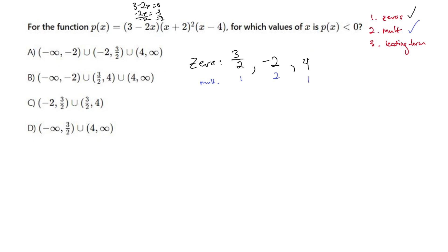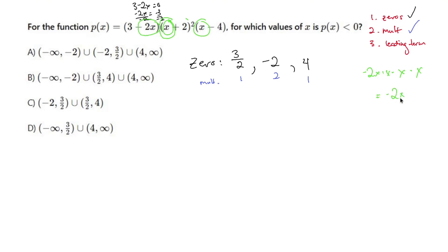The last thing is to find the leading term. You find it by taking the leading term of each factor and multiplying them together as many times as the exponent requires. The second factor's x is multiplied twice because the parentheses is squared. So the leading term is negative 2x times x times x times x again, which gives negative 2x to the fourth.